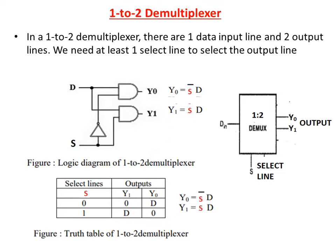Now we will draw the logic diagram for this expression. The S input is here and the complemented S input we will obtain here. So the output Y0 is equal to S bar D, and here the output Y1 is equal to S D. This is the logic diagram representation for 1 to 2 D-multiplexor.